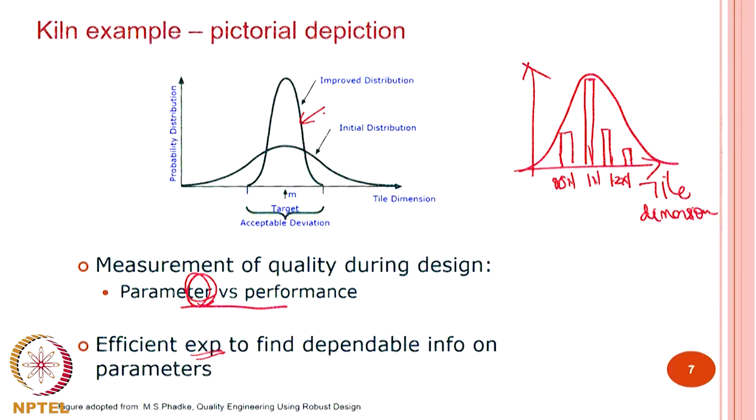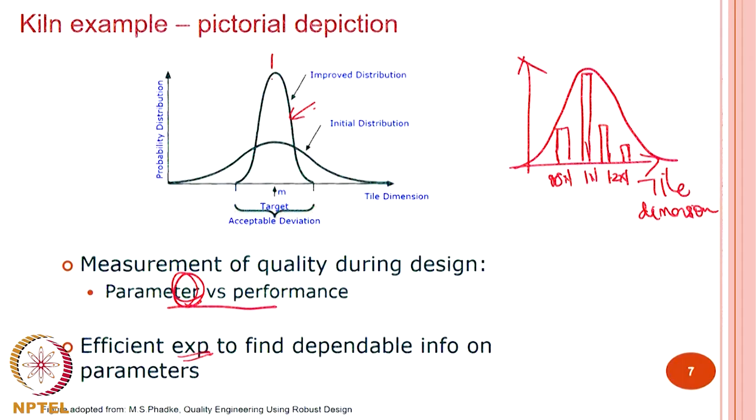What are these types of distributions called? These are probability distributions — probability density functions. These are called the normal distribution or the Gaussian distribution. It is a hat-shaped distribution, like a Mexican hat that you wear. There are some interesting properties of this distribution: it is a symmetric distribution.